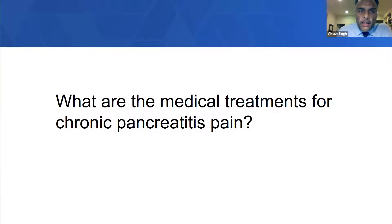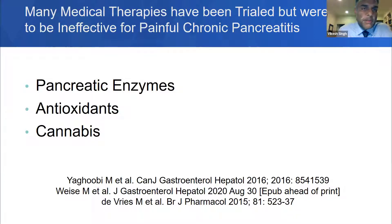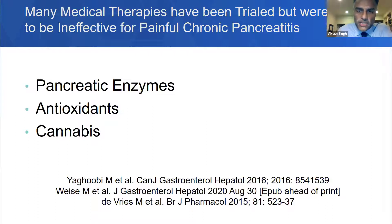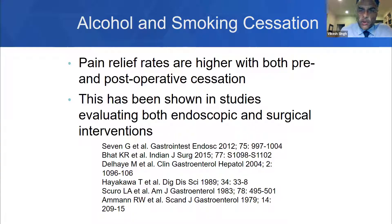Now shifting to medical treatments for chronic pancreatitis pain, there are some therapies shown to be ineffective, including pancreatic enzymes, antioxidants, and cannabis — at least one trial evaluating cannabis for pain in chronic pancreatitis showed no increased response over placebo. Alcohol and smoking cessation are important, with higher pain relief rates seen with both pre- and post-operative cessation, and that holds true for a range of interventions including both endoscopy and surgery.